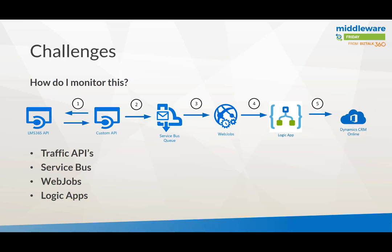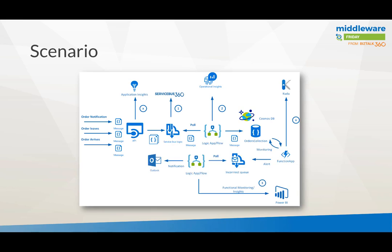Looking at this solution, there are several touch points to monitor: traffic between APIs, the Service Bus, the web job's health, the API itself, and the Logic Apps. That creates challenges because you have multiple tools monitoring the health of each service. To illustrate this further, I used a different logistics scenario — which I also blogged about on the BizTalk 360 blog — to really showcase what the challenges could be with regards to monitoring an end-to-end solution.